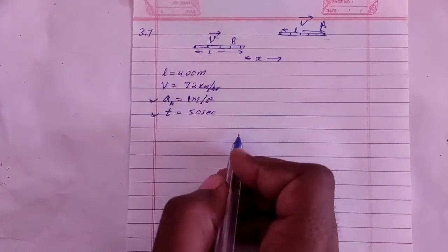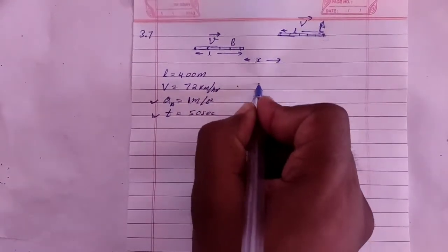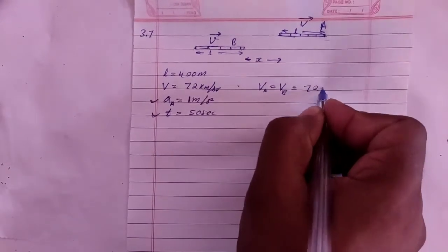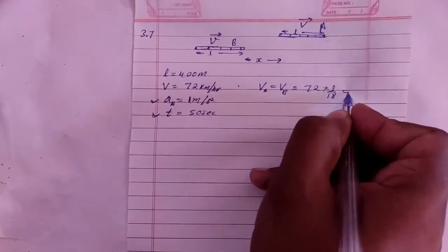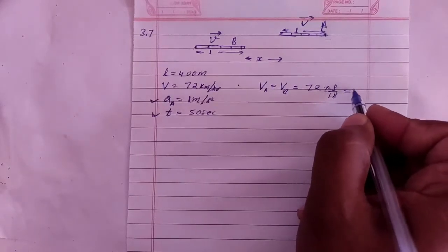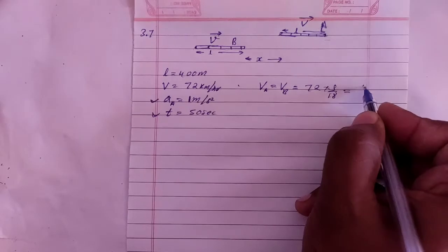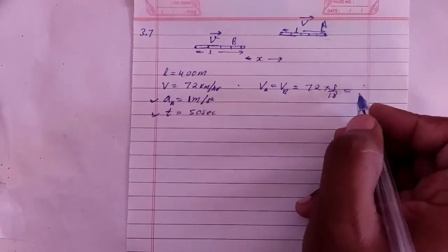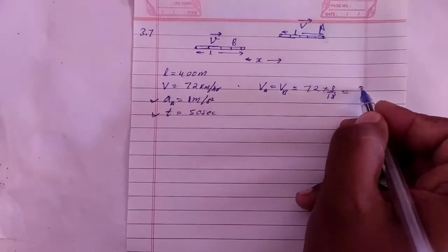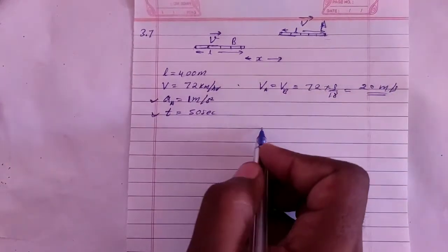So here, both have the same initial speed. Velocity of A equals velocity of B, which is 72 km per hour. Converting to meters per second: 72 km/h equals 20 meters per second.